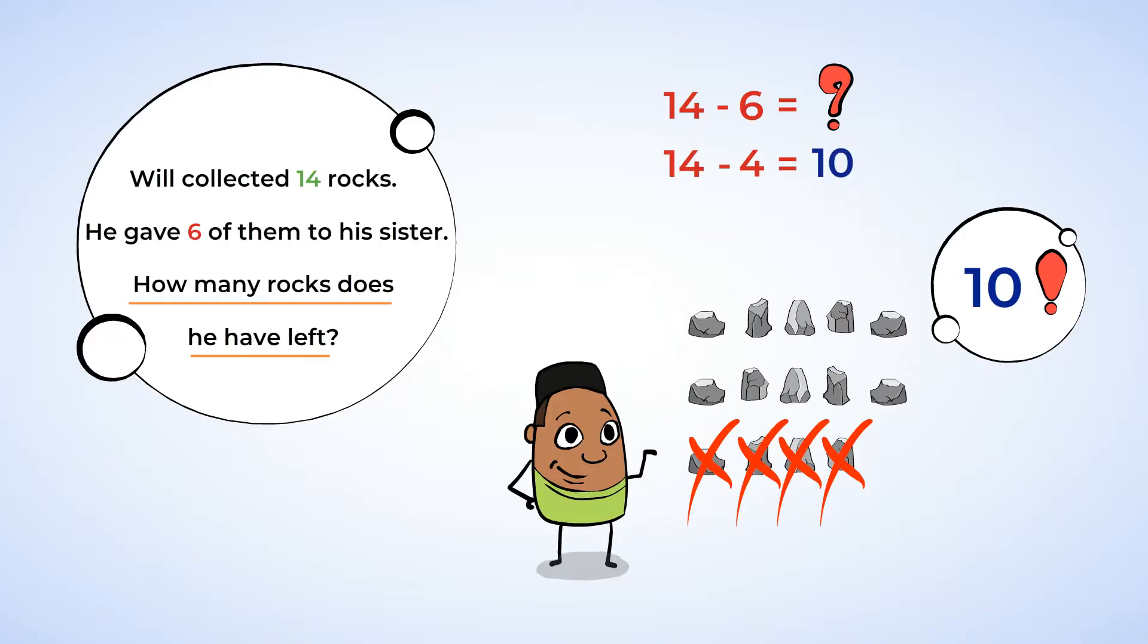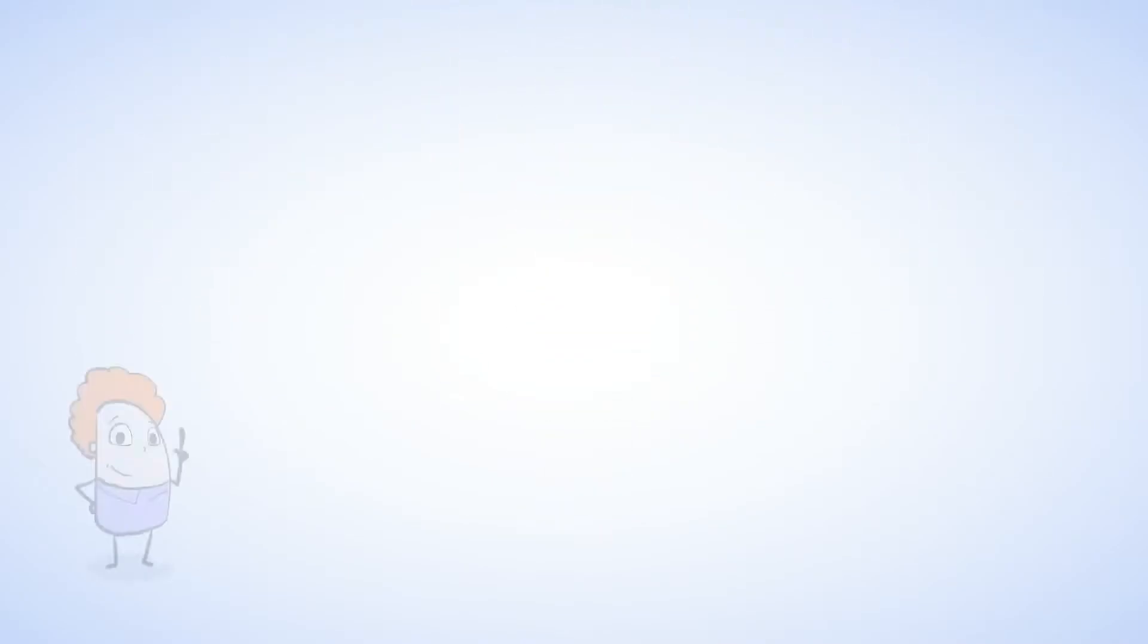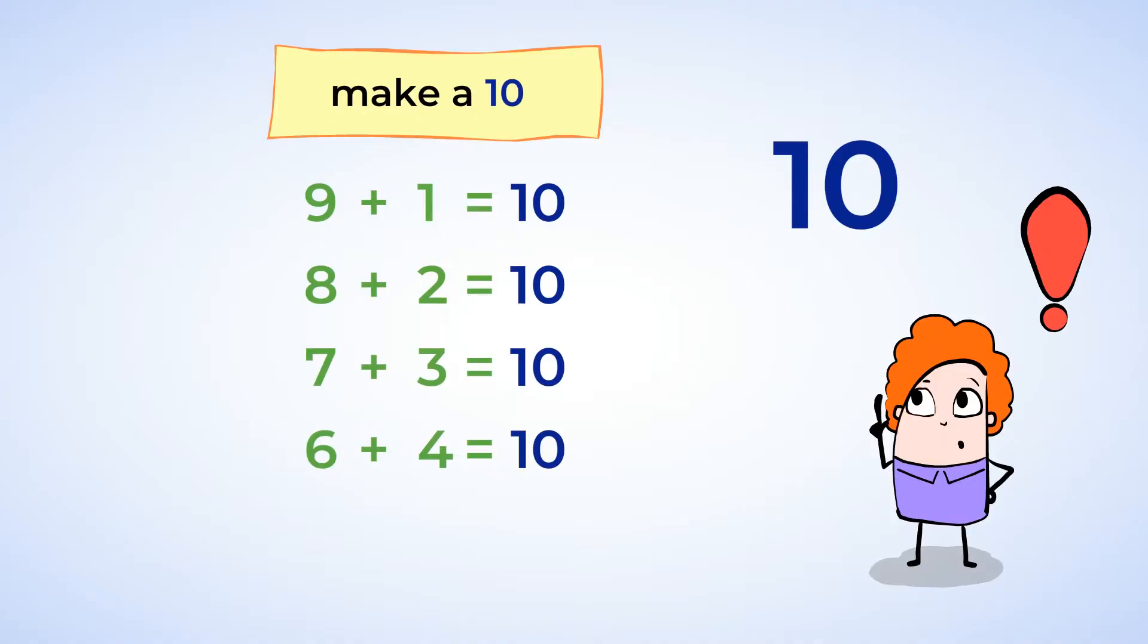Because you only subtracted 4, not 6, you just need to subtract 2 more rocks. 10 minus 2 equals 8. Will has 8 rocks left. Way to go! Today you learned how to add and subtract by finding 10. First, you should memorize all the ways to make a 10.